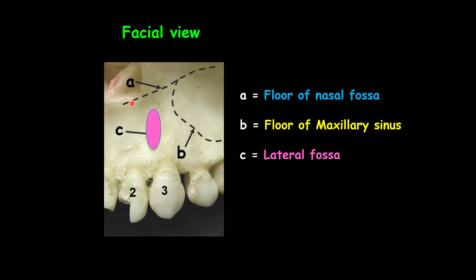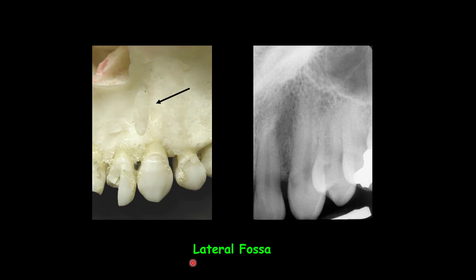The lateral fossa is also called the incisive fossa. It is a gentle depression on the maxillary bone, above and posterior near the apex of the lateral incisor. On a periapical radiograph it is seen as a diffuse radiolucent region. Sometimes this region can be superimposed over the root of the lateral incisor, mimicking a periapical lesion.